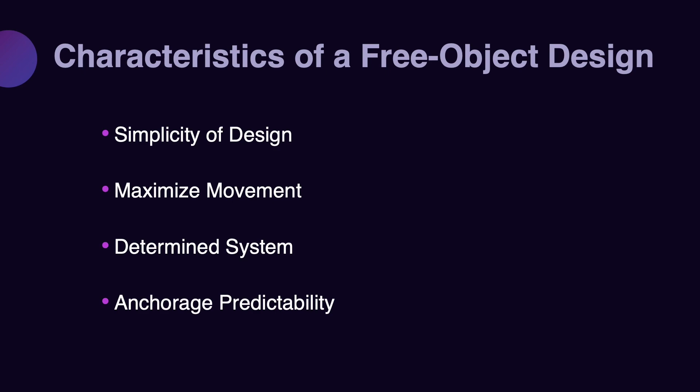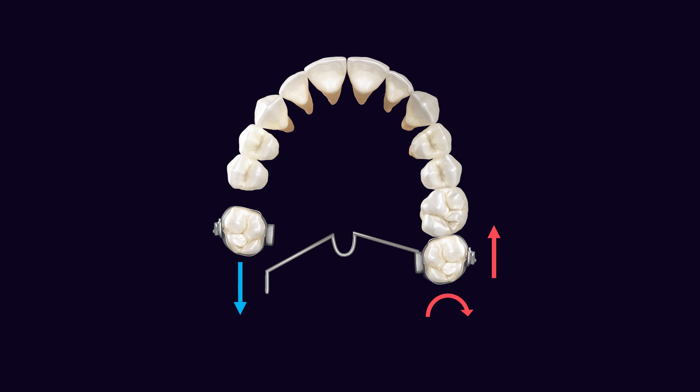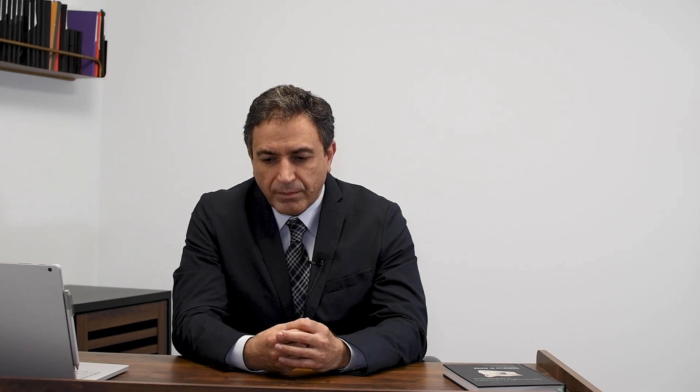The fourth characteristic of free object design is that, similar to the target unit where force and moments are well defined, the reaction force and moments are also well defined. There are no unknown forces and moments appearing in the system that produce side effects you don't know about, which makes anchorage preparation much simpler and more precise. You don't need extensive anchorage preparation because you don't have unknown forces and moments to react to.